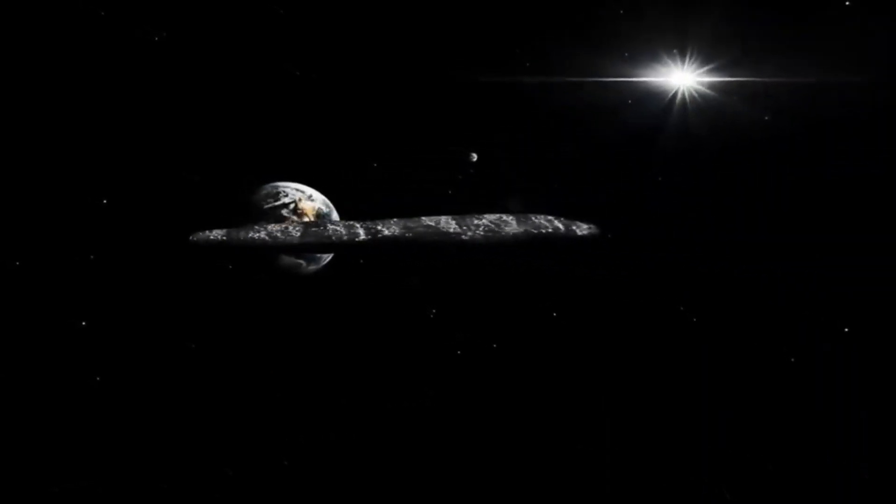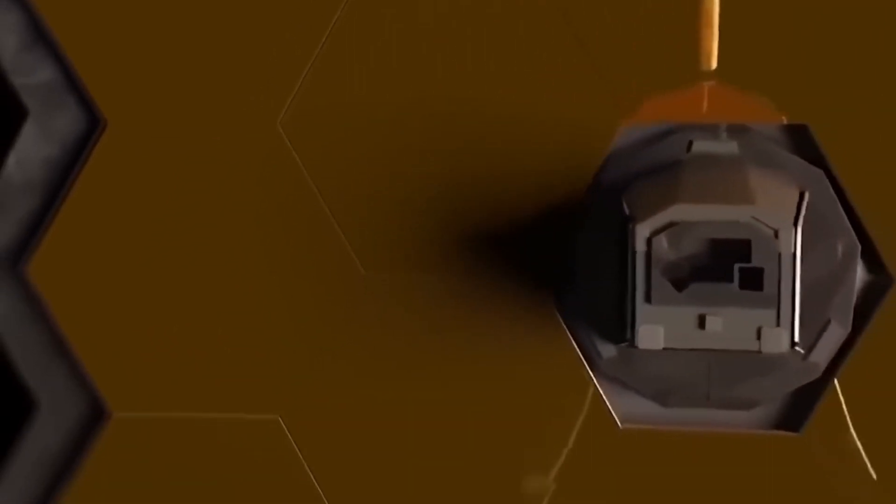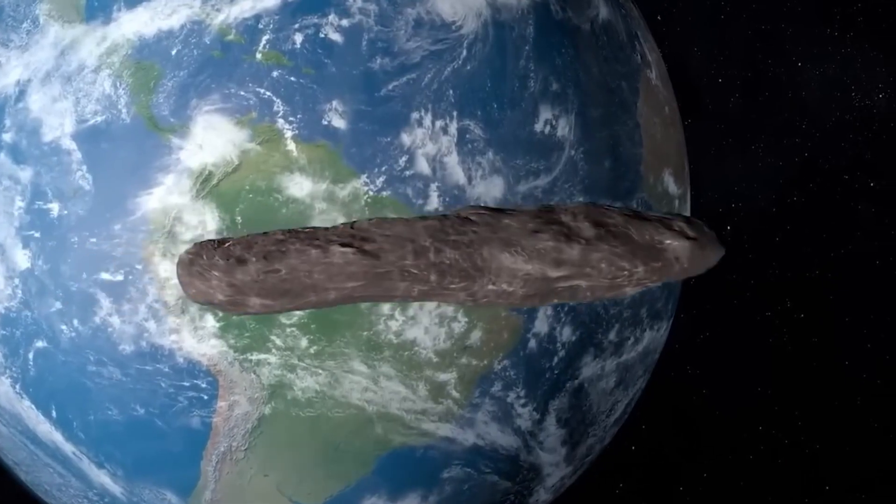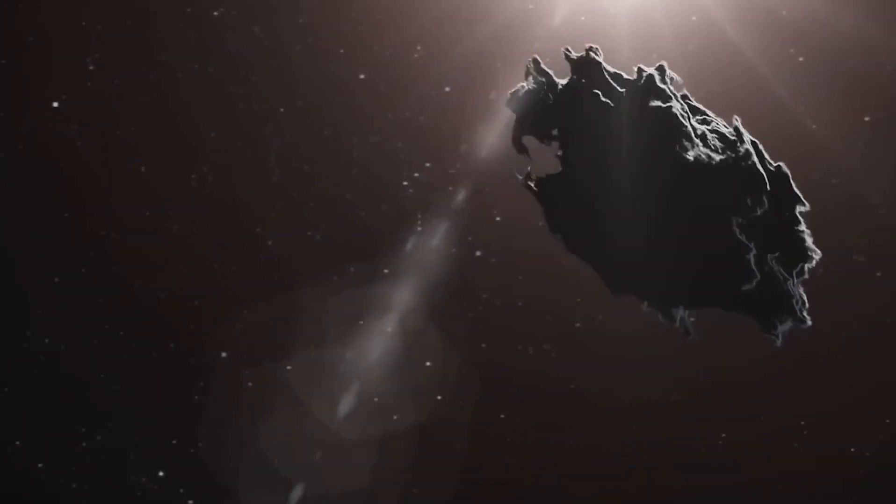The James Webb Telescope's observations of Oumuamua also shed light on its size, shape, and surface features. Detailed measurements and imaging revealed the object's dimensions, which were found to be unusually elongated compared to most asteroids within our solar system. This elongated shape, combined with its rapid rotation, further intrigued scientists and prompted further investigations into its origin and formation.